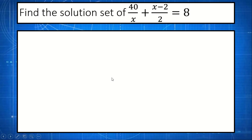Example number 1: Find the solution set of 40 over x plus x minus 2 over 2 is equal to 8. In this rational algebraic expression, we can transform this to a quadratic equation. Step number 1: we're going to multiply both sides of the equation by the least common multiple of all denominators. In the given equation, our LCM is 2x.